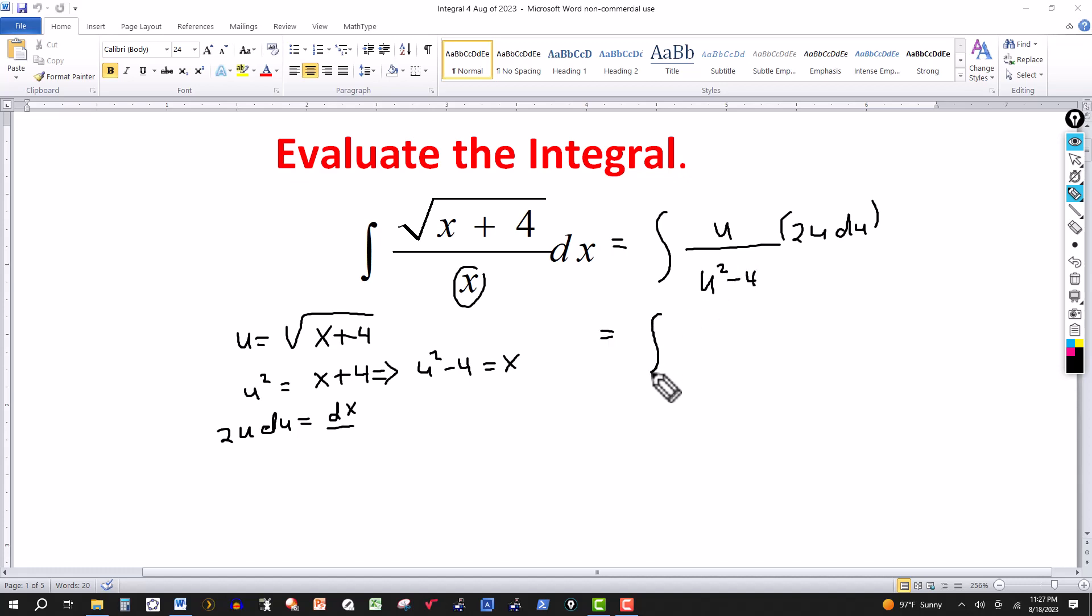So in place of this x here I can replace that by u squared minus 4. Let's go ahead and multiply it out in the numerator. This will be u times 2u so this will be 2u squared du.